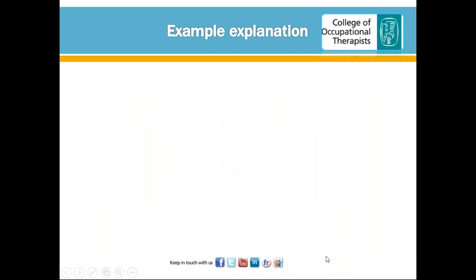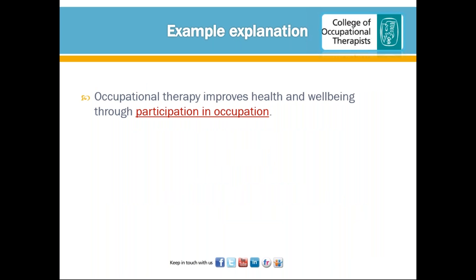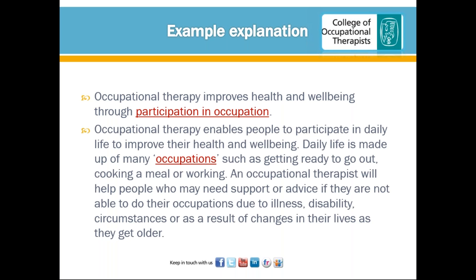The College of Occupational Therapists offers a clear high-level definition: occupational therapy improves health and wellbeing through participation in occupation. A more elaborative version states: occupational therapy enables people to participate in daily life to improve their health and wellbeing. Daily life is made up of many occupations, such as getting ready to go out, cooking a meal, or working.